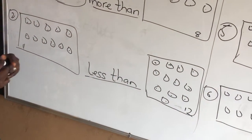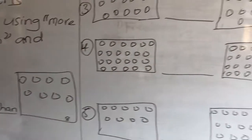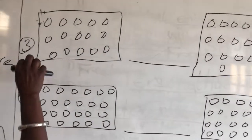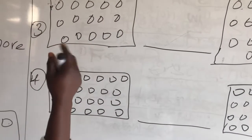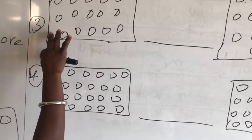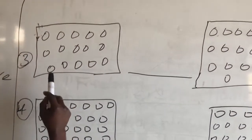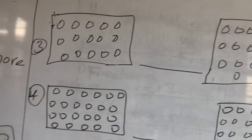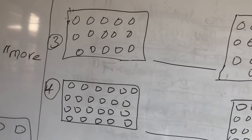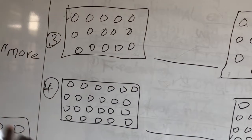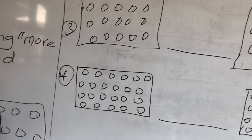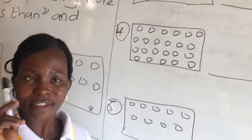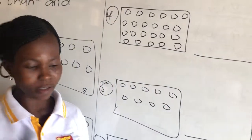Let's move on. Always make sure after counting, you write the number somewhere. You can write it in a box, on top, or under it. If you don't write the number, you won't know what to choose — whether less than, more than, or same as.